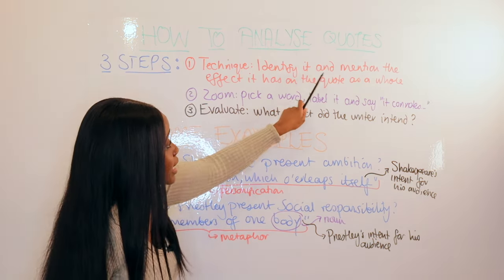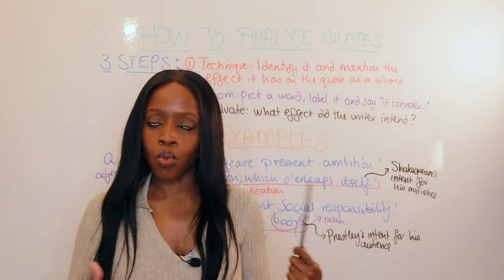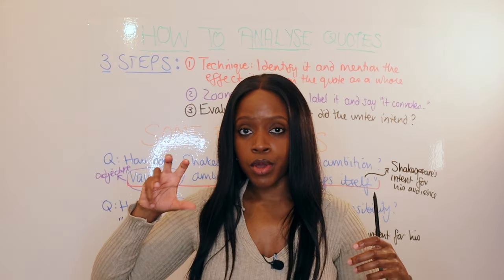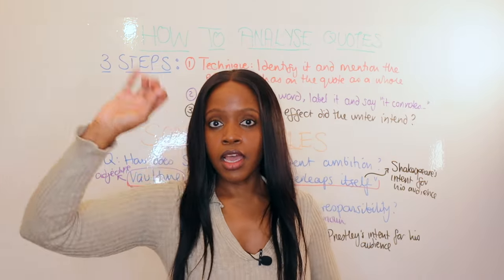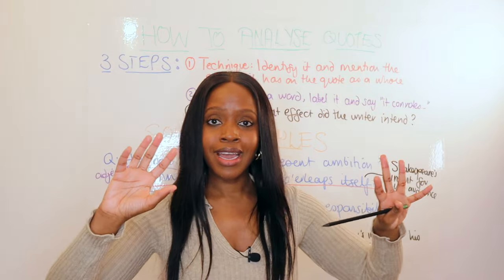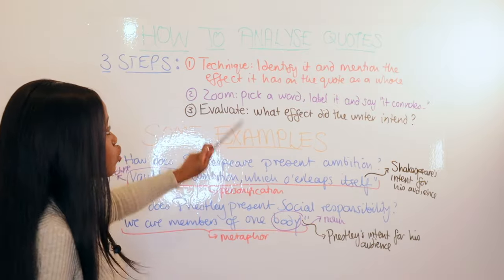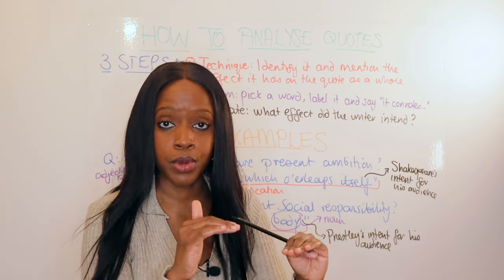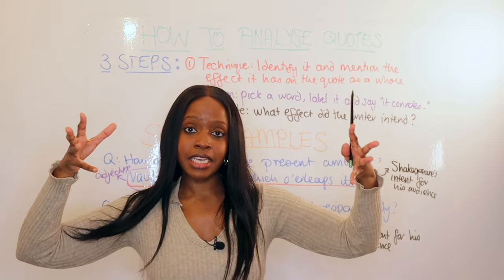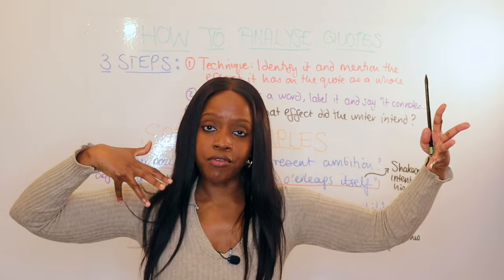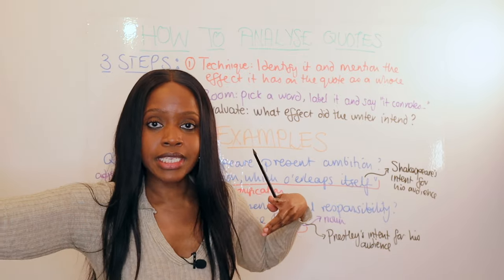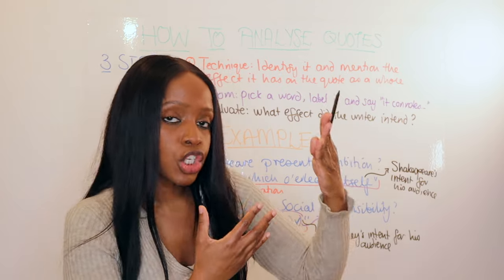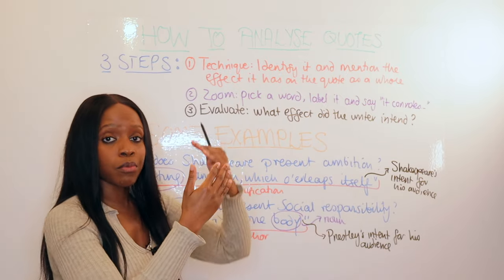You identify whether the writer has used a metaphor, simile, alliteration, personification, or whatever — that's great — but stopping there means your analysis is very shallow. Mention the technique and talk about how it powerfully conveys a certain image or whatever is happening within the text. That's still just a little bit of analysis, so you then need to do a deeper dive in step number two.